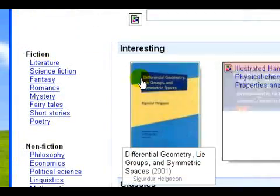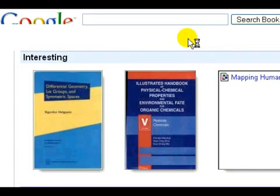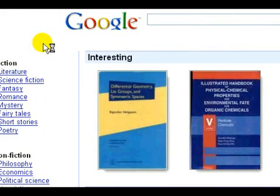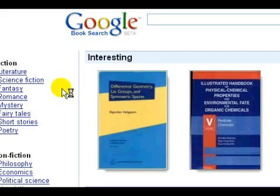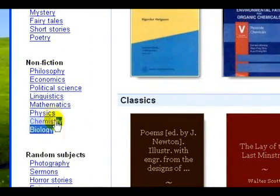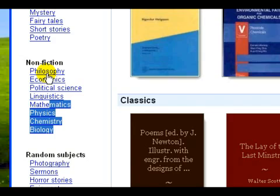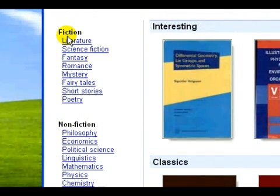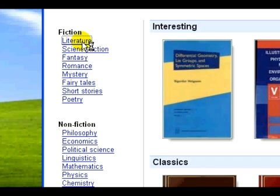When you click on that, you see that Google is now only looking at the index of books that you can search through. On the left hand side there are many different categories of books that you can look through. Let's go to Literature and do a search for the classic book, The Scarlet Letter.